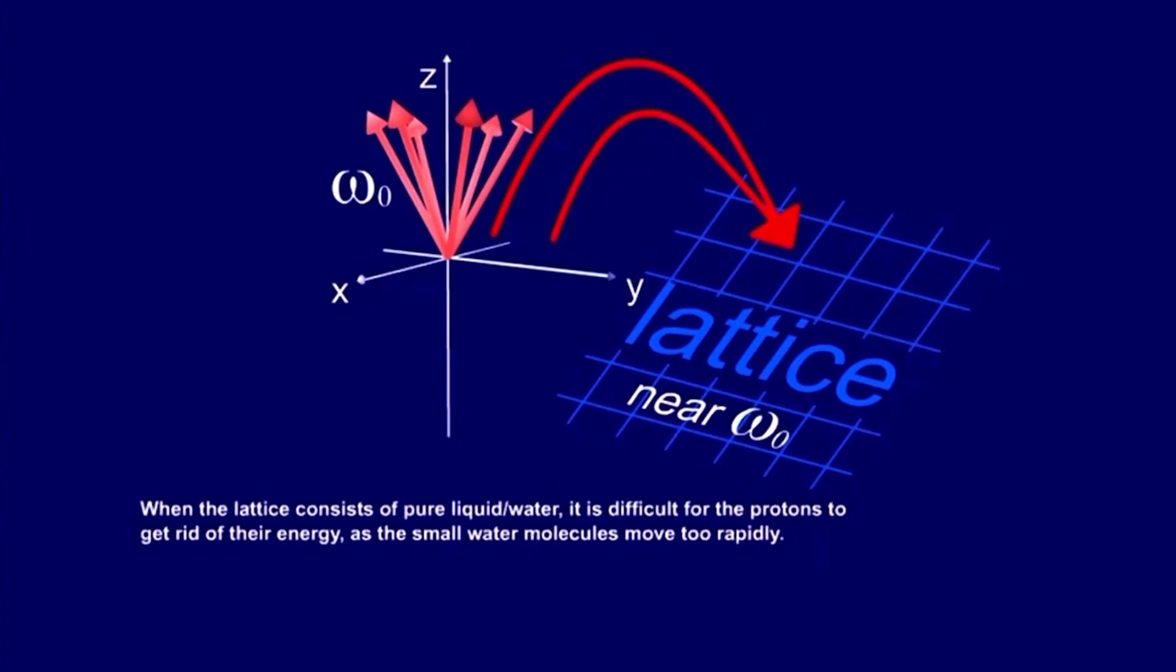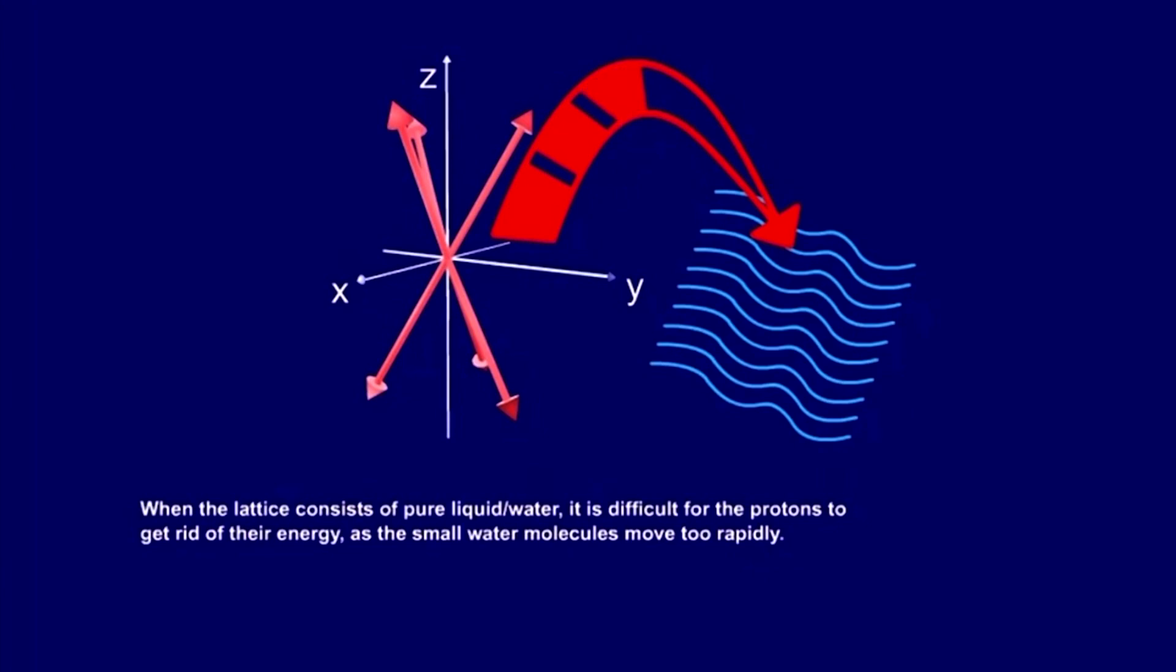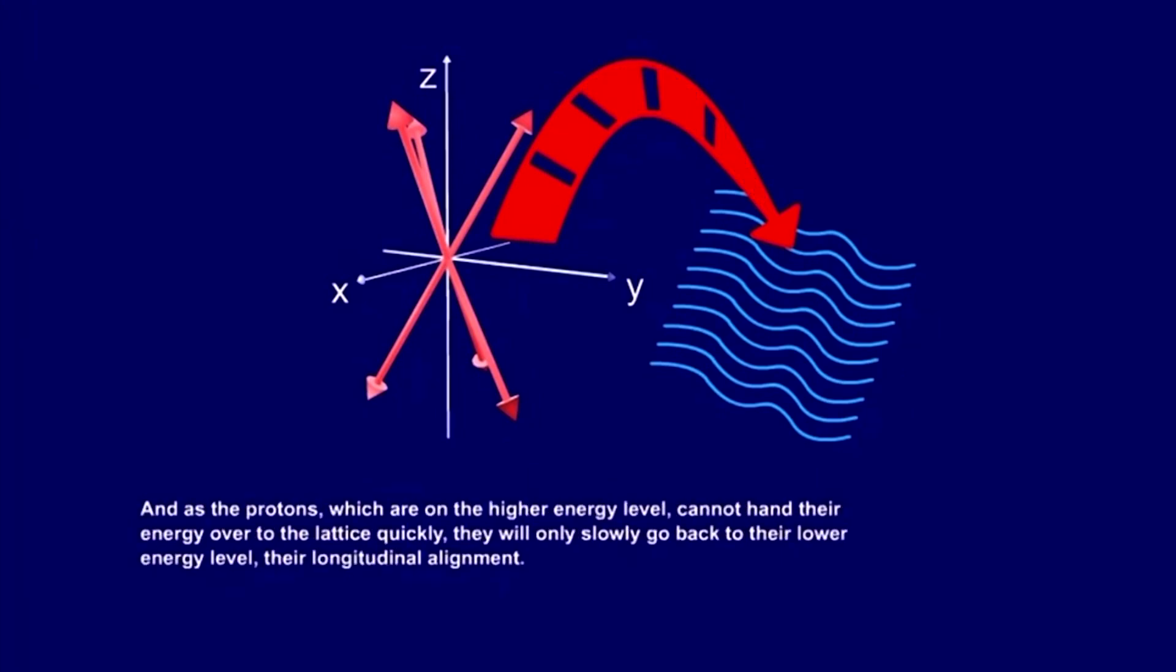When the lattice consists of pure liquid water, it is difficult for the protons to get rid of their energy, as the small water molecules move too rapidly. And as the protons, which are on the higher energy level, cannot hand their energy over to the lattice quickly, they will only slowly go back to their lower energy level, their longitudinal alignment.